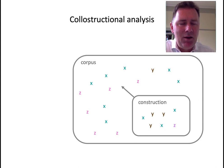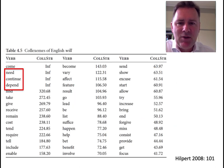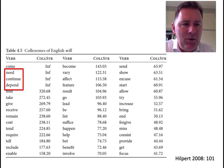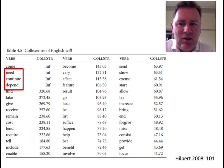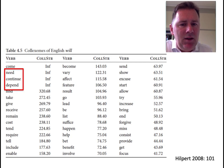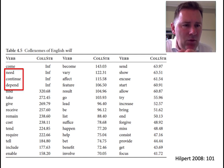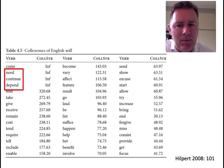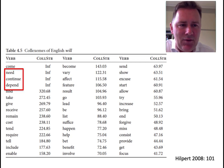Applying this logic to English will in the British National Corpus, the table shows verbs most strongly over-represented with will. English will forms an associative network where some links to lexical verbs are much stronger than others. Looking at the strongest links, we can figure out that will has a relative preference for verbs with non-agentive and atelic meanings — verbs like need, continue, or depend.